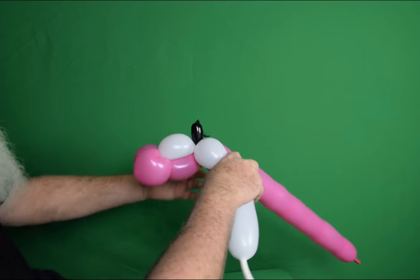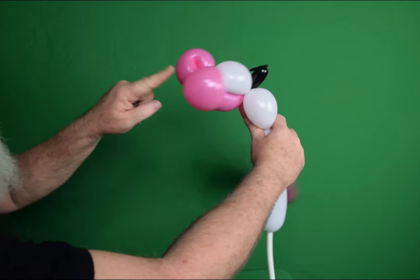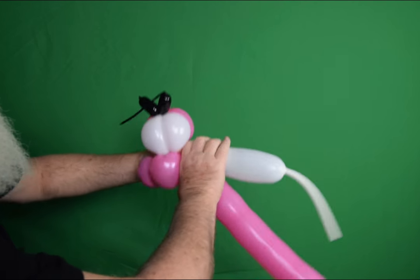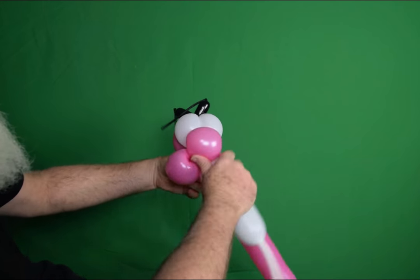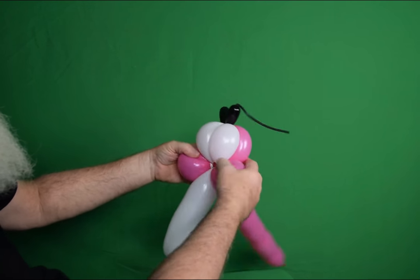Then you're going to bring that down and twist where these two are together into your two fold twists we created at the very beginning. Twist those around a couple of times to secure them in.